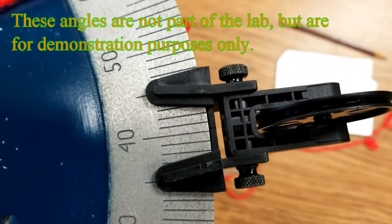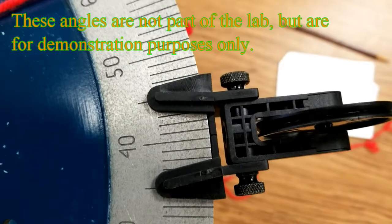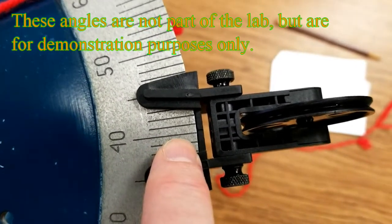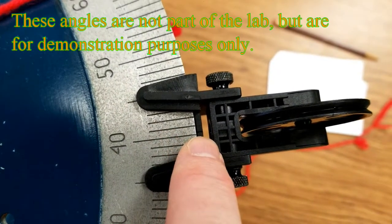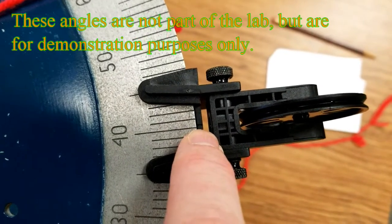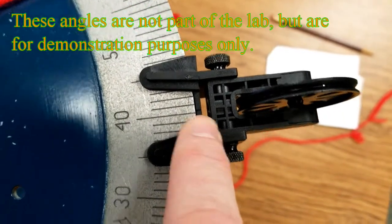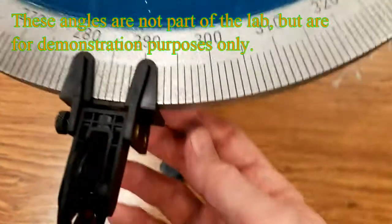And so right now this pulley is in between 40 and 41 degrees, and that would be about 40.2. That's my estimate, maybe 40.3. This one right here, looking at that, that is between 285 and 290.